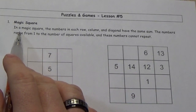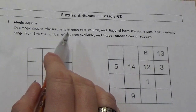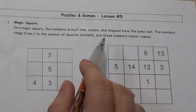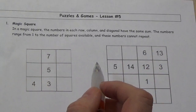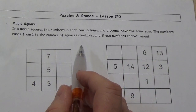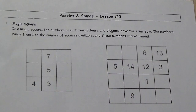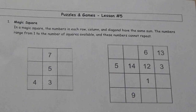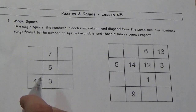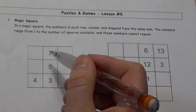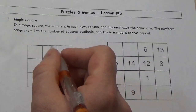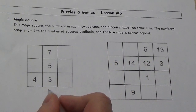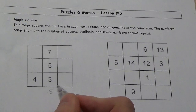In a magic square, the numbers in each row and column and diagonal have the same sum. The numbers range from 1 to the number of squares available, and these numbers cannot repeat. You've probably seen something like this before. Let's look at the smaller one here. When I add up 7, 5, and 3 going along this column, I'm going to get a value of 15.